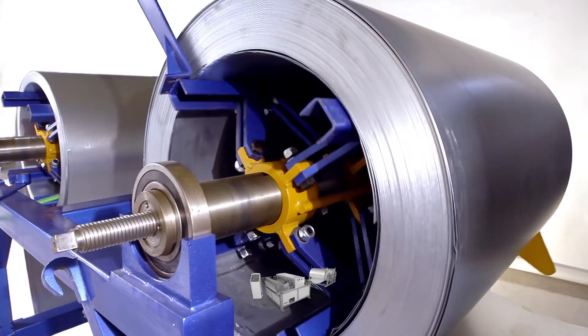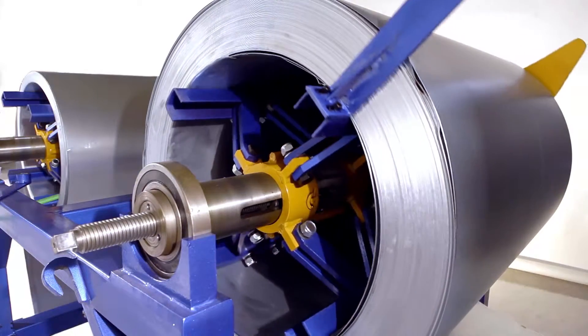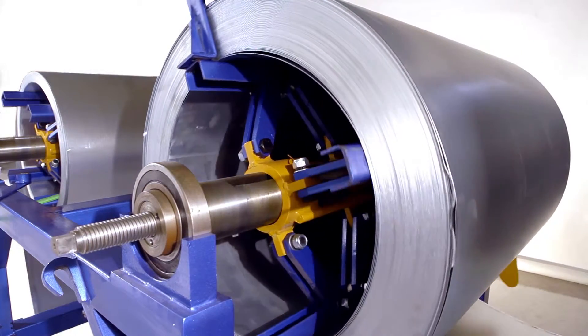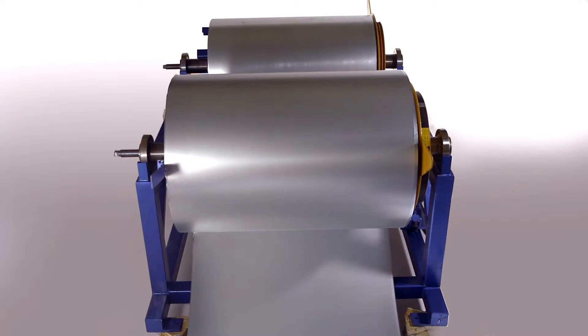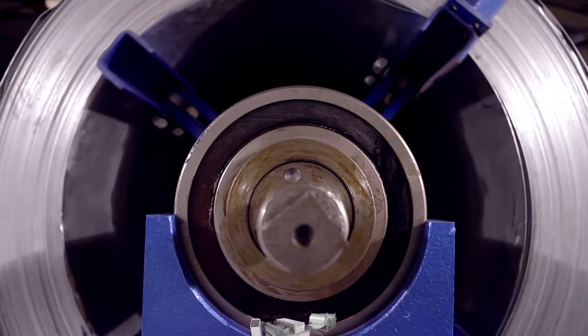The material feeding system is made through two uncoilers, providing agility to the operation while avoiding production disruptions during material exchange.